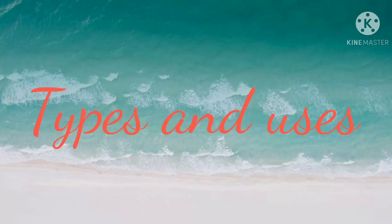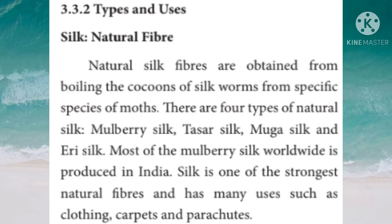Silk — Natural Fiber. Natural silk fibers are obtained from boiling the cocoons of silk worms from specific species of moths. There are four types of natural silk: mulberry silk, desert silk, muga silk and ery silk. Most of the mulberry silk worldwide is produced in India. Silk is one of the strongest natural fibers and has many uses such as clothing, carpets and parachutes.